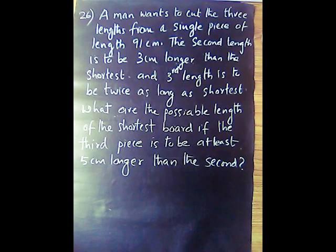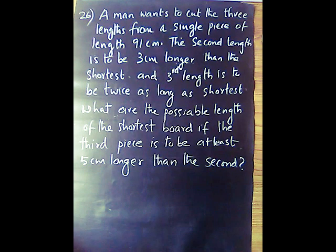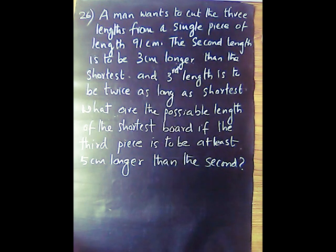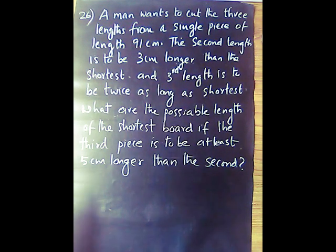A man wants to cut three lengths from a single piece of board of length 91 centimeters. The second length is to be 3 centimeters longer than the shortest, and the third length is to be twice as long as the shortest. What are the possible lengths of the shortest board if the third piece is to be at least 5 centimeters longer than the second?